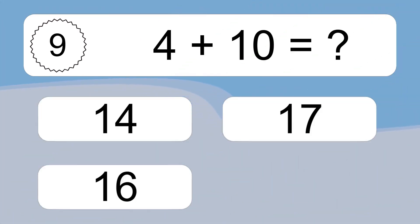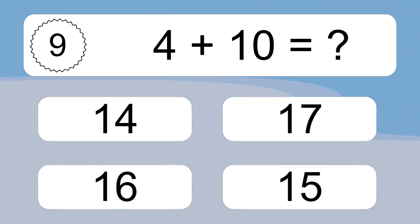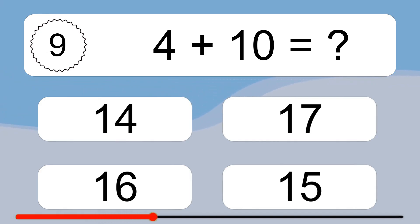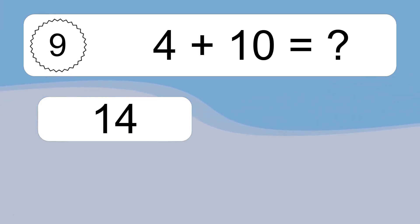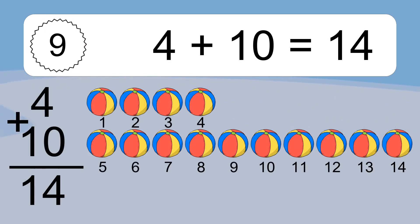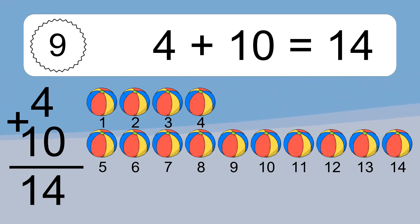4 plus 10 equals what? 4 plus 10 equals 14. Let's count it: 1, 2, 3, 4, 5, 6, 7, 8, 9, 10, 11, 12, 13, 14.